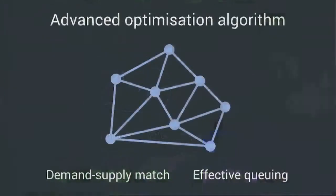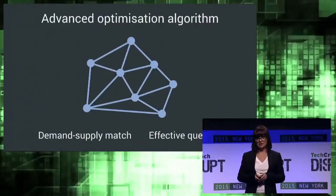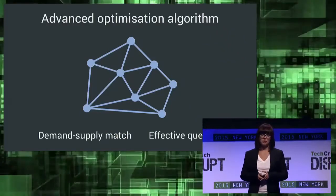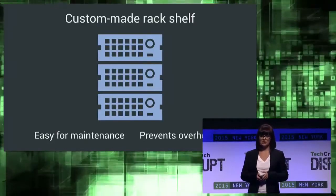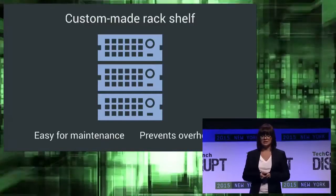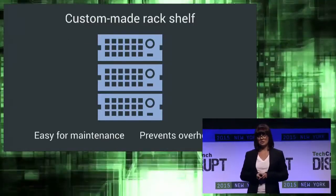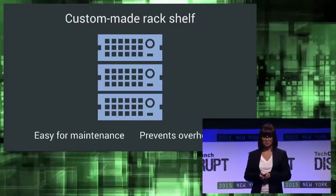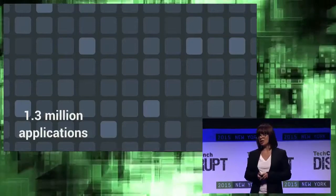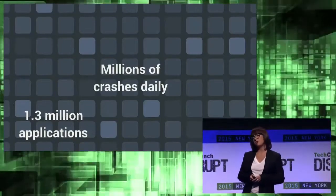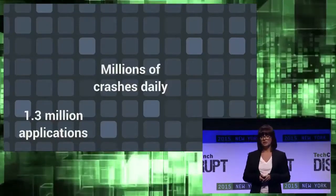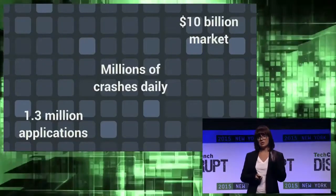We created algorithms that help us efficiently manage the inventory of devices. The inventory and purchase of new devices will be driven by demand and effective queuing algorithms. We created custom-made rack shells that you can put inside the data center to add devices really easily, and those rack shells also prevent devices from overheating. There are over 1.3 million apps available on the market, each one has to be tested, and there are millions of crashes reported every single day. Every crash should be fixed — that makes it a $10 billion market, and those numbers are only going to go up.